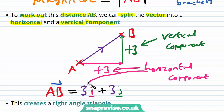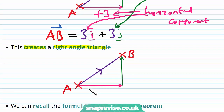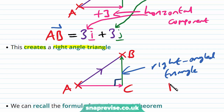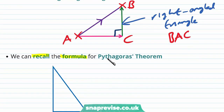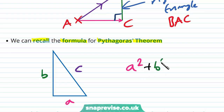So here we have our horizontal component and our vertical component. Drawing it in this way creates a right-angled triangle. We again have the points a and b, and in the middle, when we've only travelled the +3 to the right — i.e. the horizontal component, but not the vertical component — we can write a point c. At the point c there is indeed a right angle. So this is the right-angled triangle BAC. We can recall the formula for Pythagoras' theorem: if we have lengths a, b, and hypotenuse c, then a squared plus b squared equals c squared.